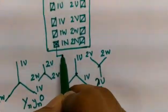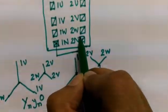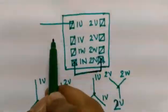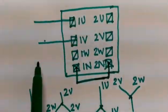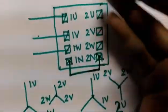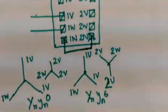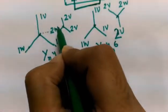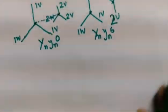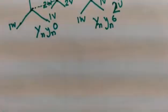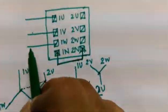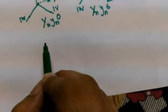For detecting the vector group, what we have to do is first short the two neutral points — we have shortened the two neutral points. Then we will apply a reduced voltage to the high voltage winding, and the secondary will have the induced voltage as per the turns ratio. What we have basically done is connected these two neutral points together.